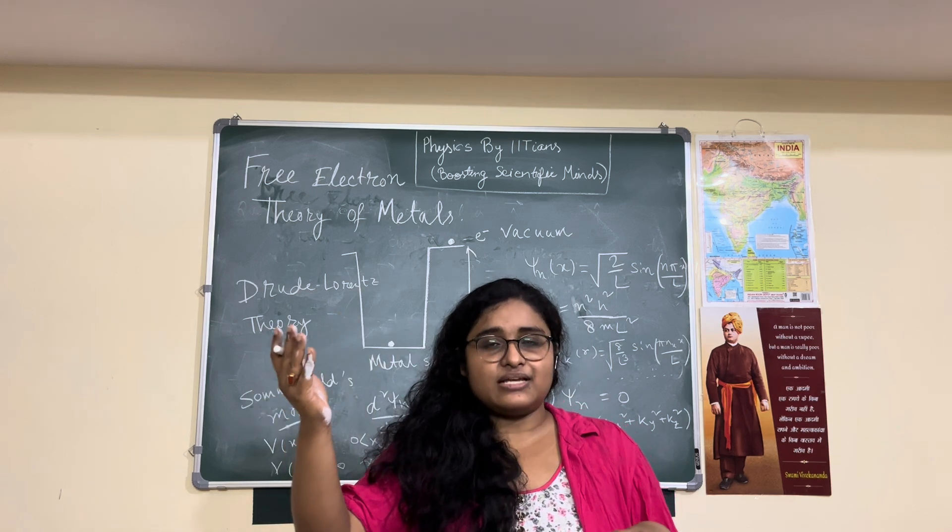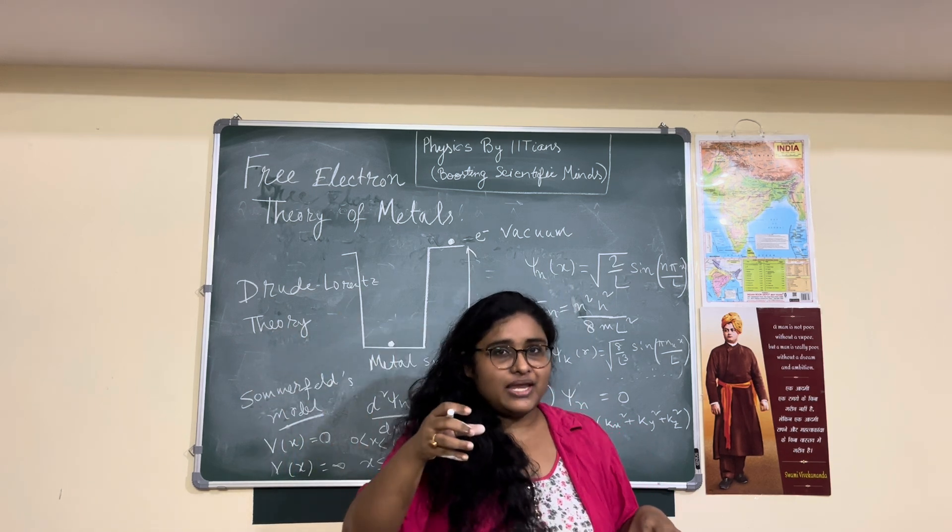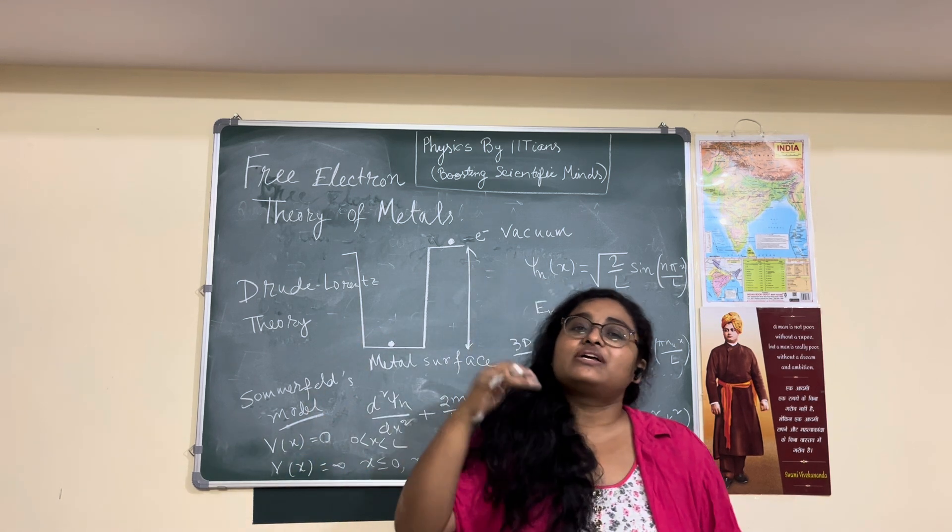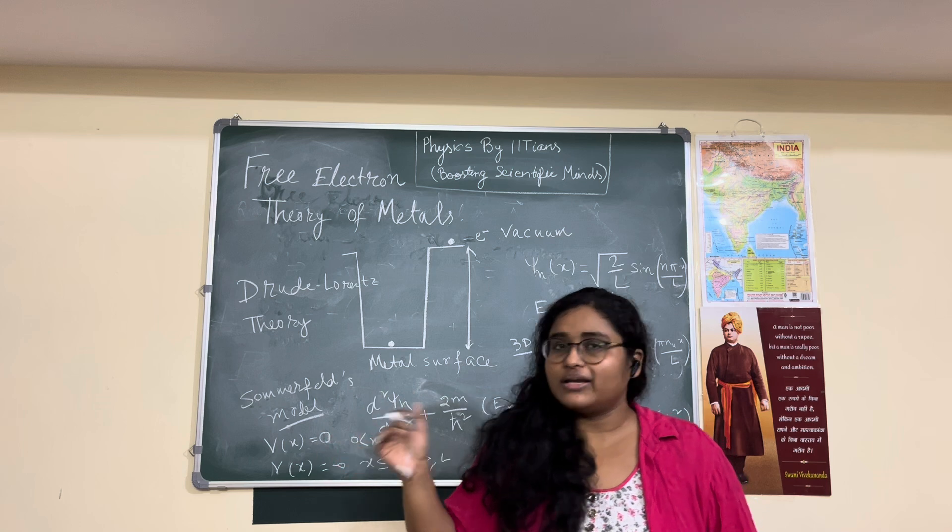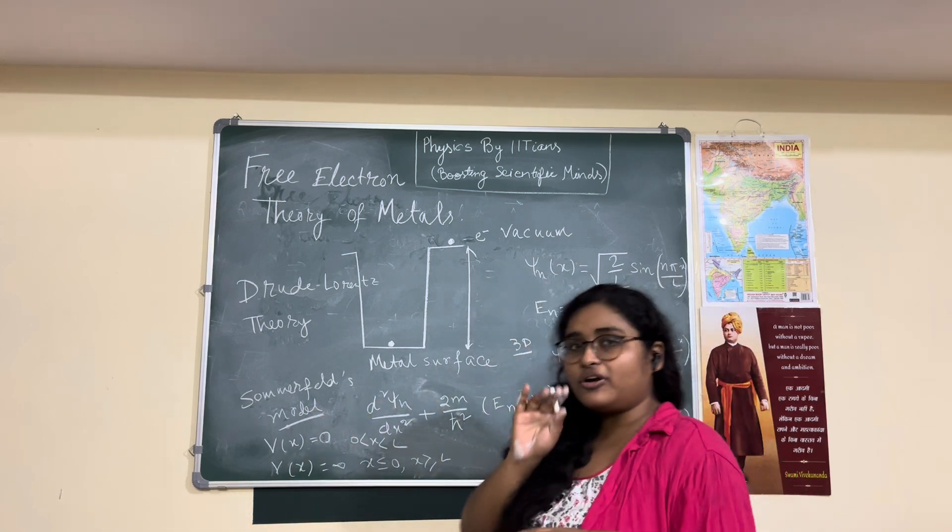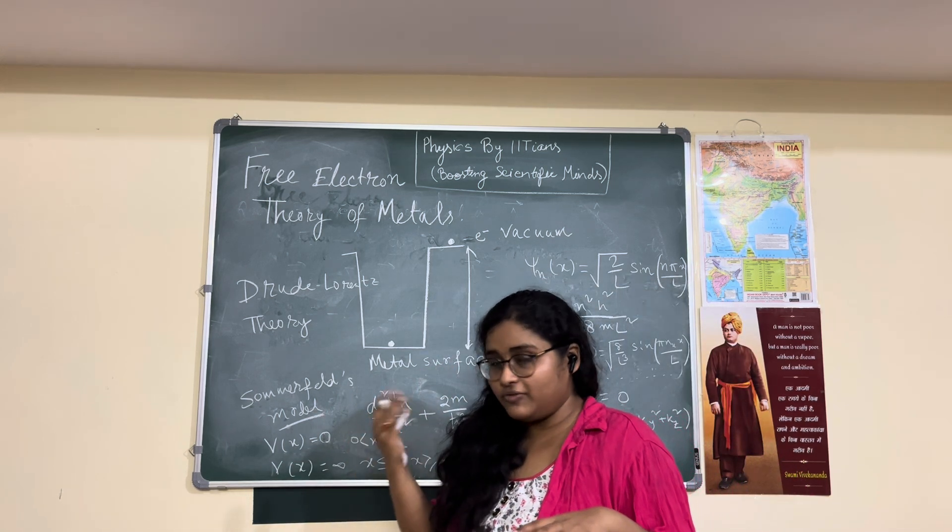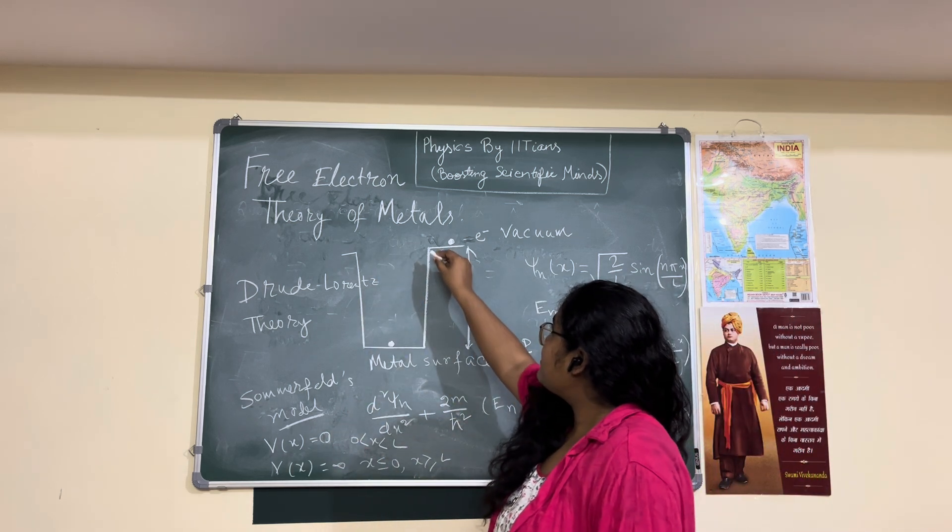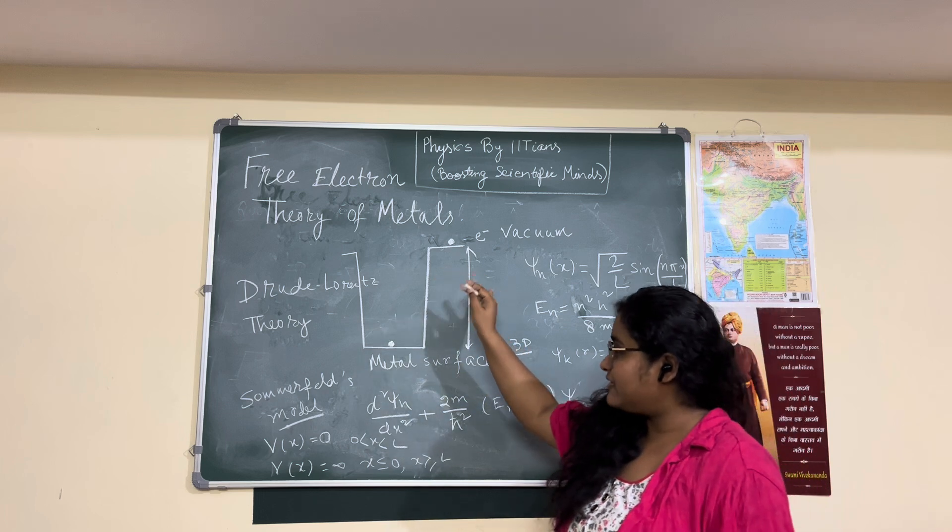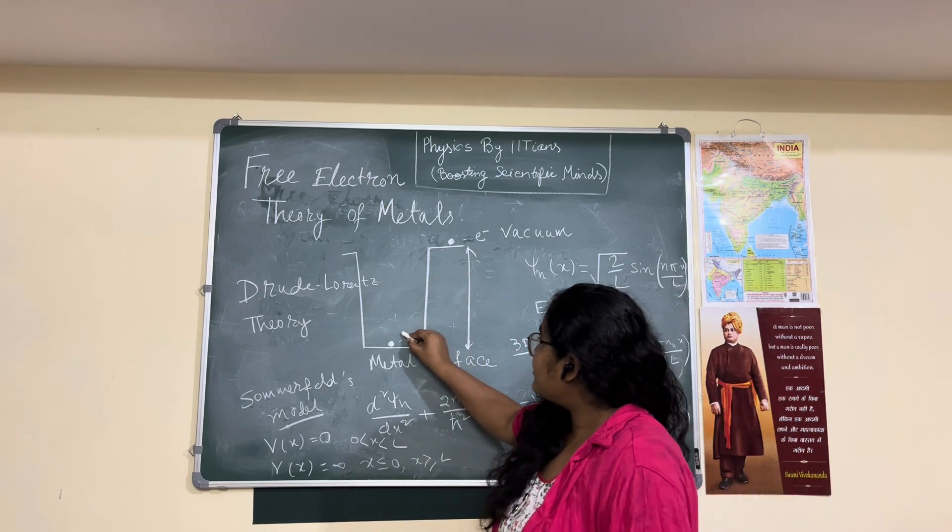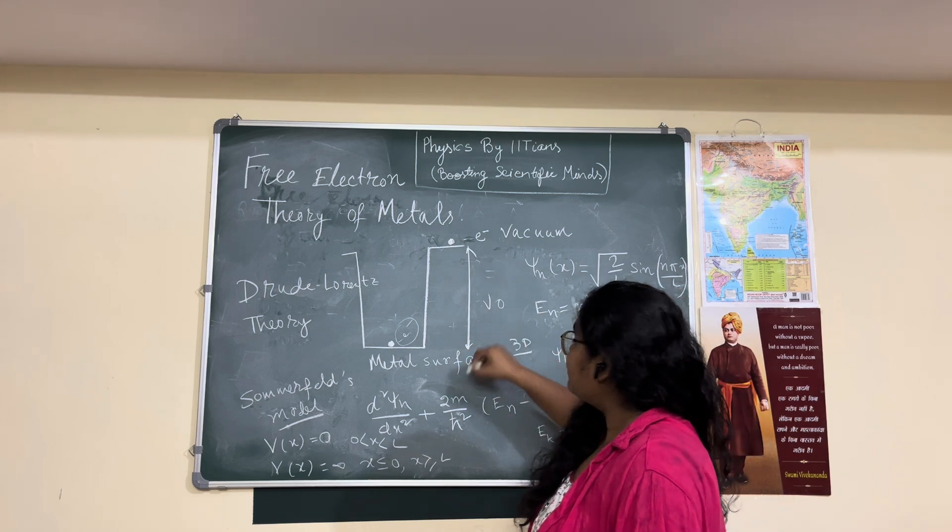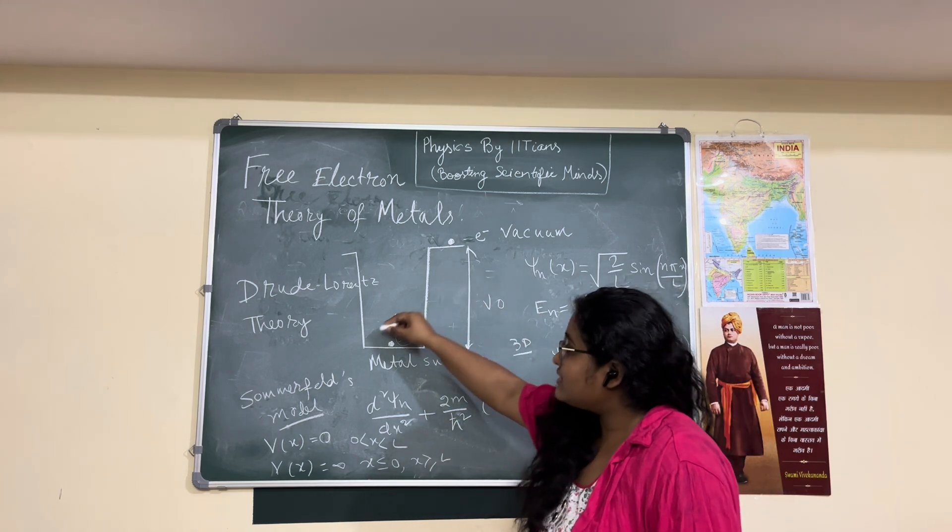But if you put some external energy, external electric field, then it will come out and it will show conductivity. So that was his idea. For that view he approximated, let's say we have this metallic box or metallic surface. So what happens if the electron inside the metal?